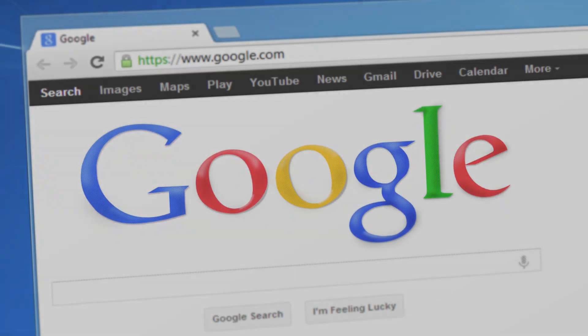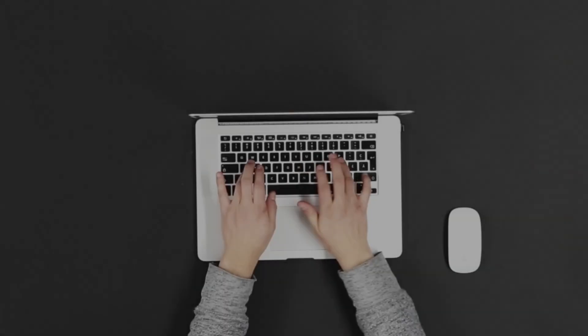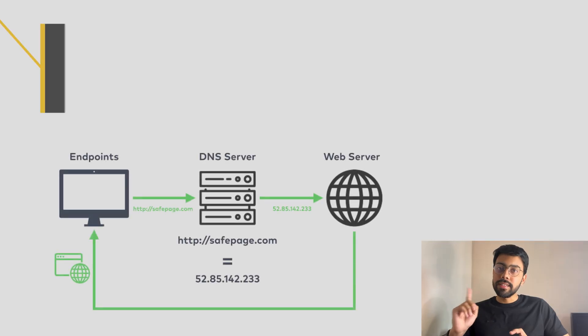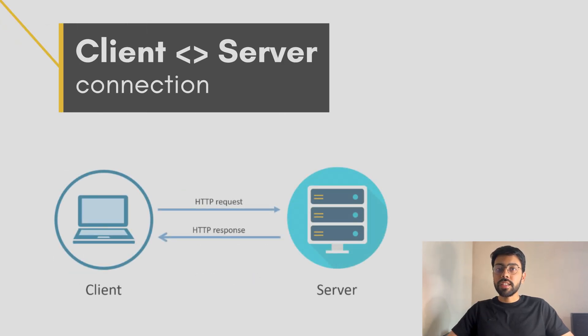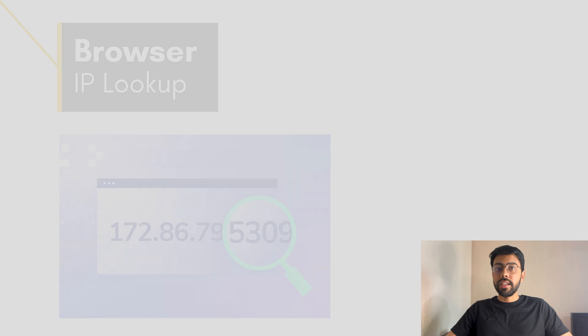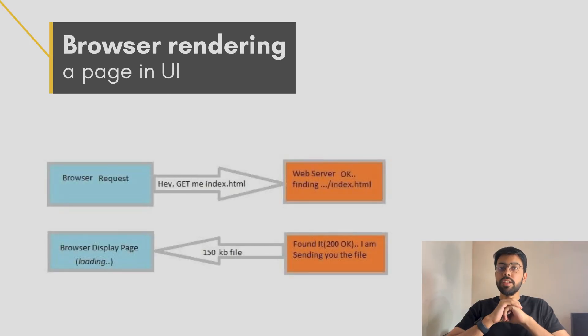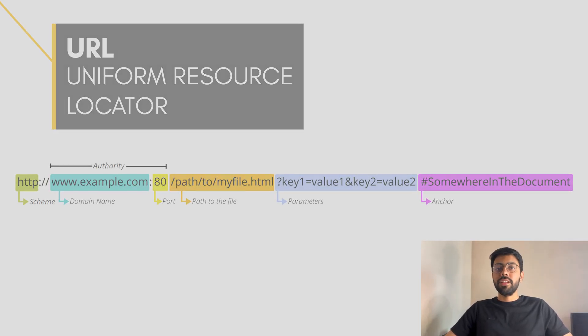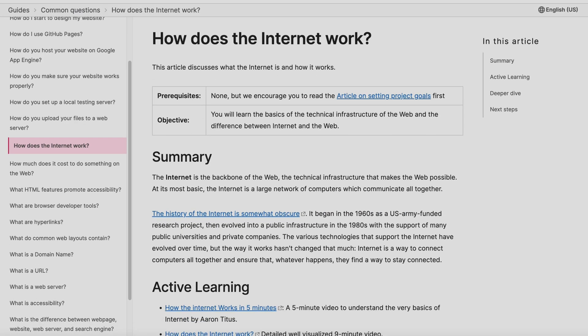So the first and foremost thing is the browser. You have to understand the basics of the browser. Many people miss this topic and jump directly into HTML, CSS, and JavaScript — but you don't want to do that. When you hit a browser address, you need to know what happens behind the scenes: how the browser establishes a connection with the server, how it resolves the IP address, and how it renders the page you see in the UI. You'll also understand what a URL is and the structure of the web.